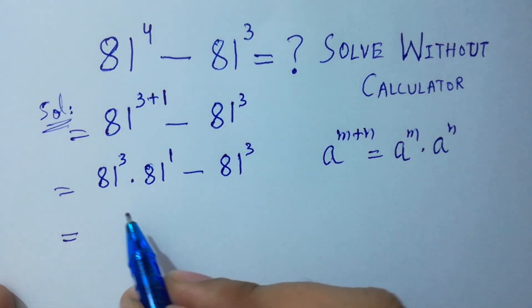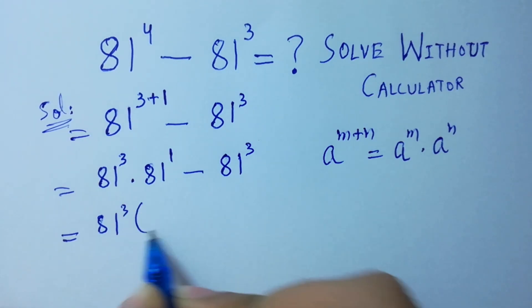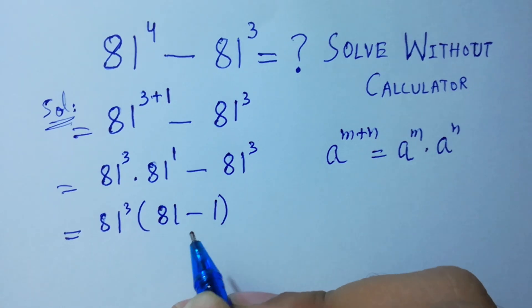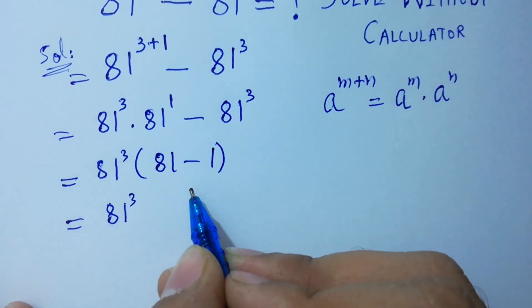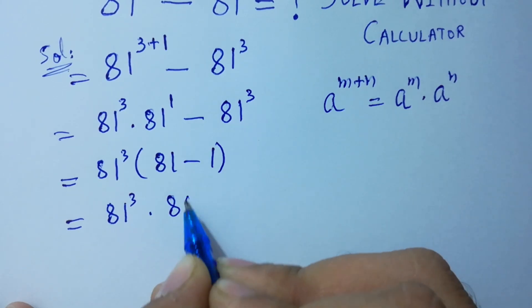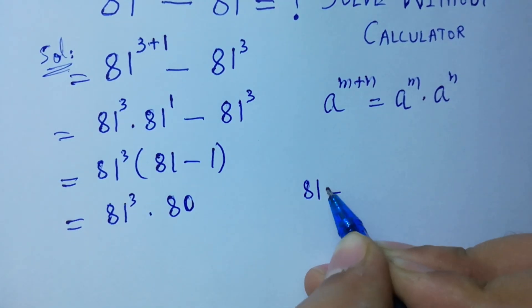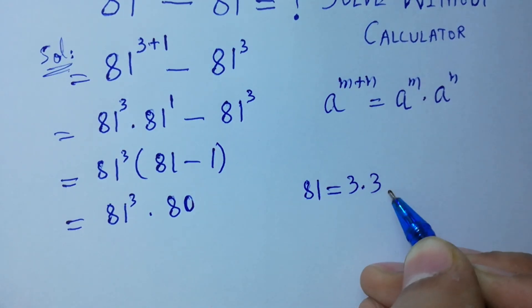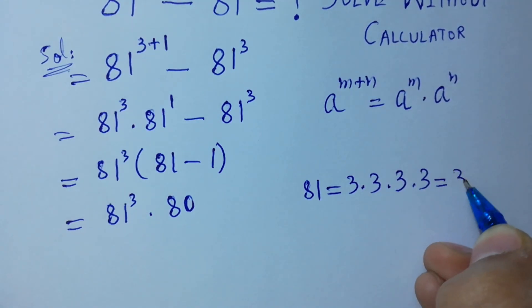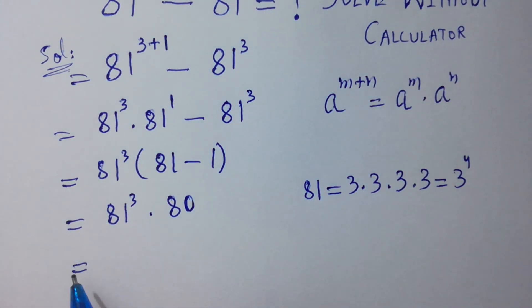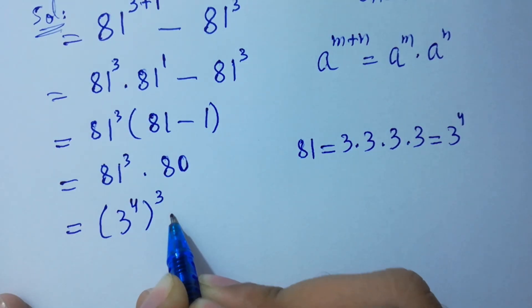Next, 81³ is common, so we factor it out: 81³ × (81 − 1), which is 81³ × 80. As we know, 81 = 3 × 3 × 3 × 3 = 3⁴. So this becomes (3⁴)³ × 80.